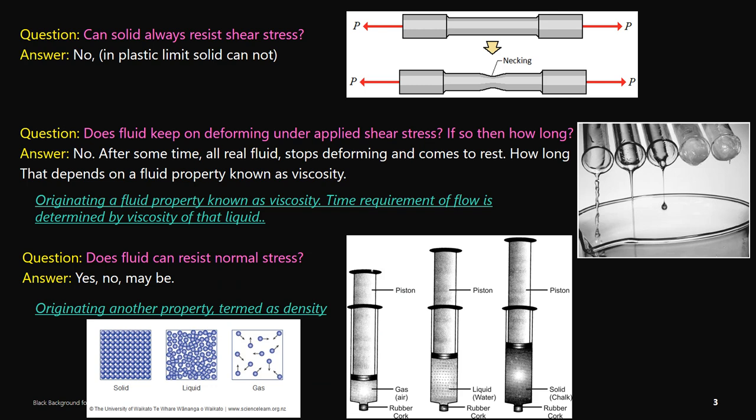Now a few questions to understand fluid and its differences from solid. First question: can a solid always resist shear stress? The answer is no. A solid resists shear stress only if it falls within the elastic limit. If you apply more shear stress, you can see permanent deformation — called plastic deformation. For example, if you elongate a rod, after some time you see necking, which is a permanent deformation that happens when the applied force is very large.